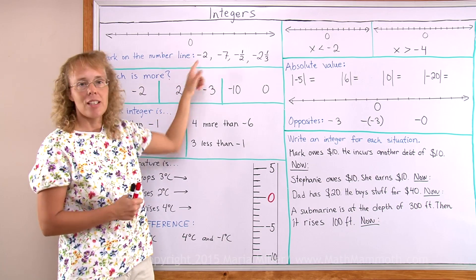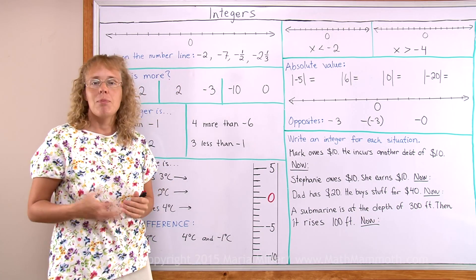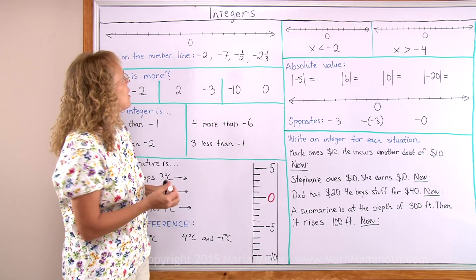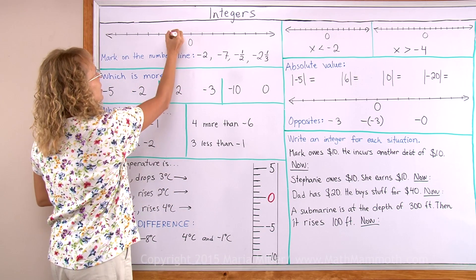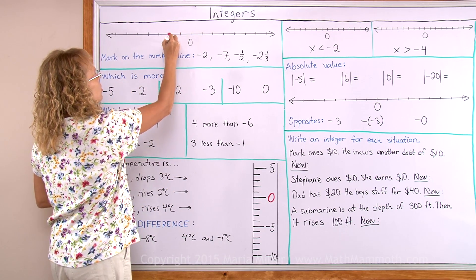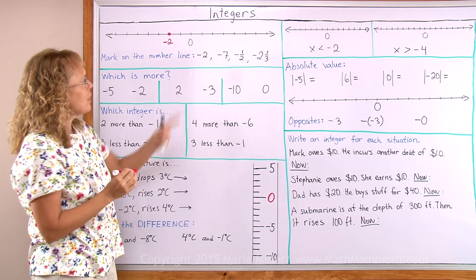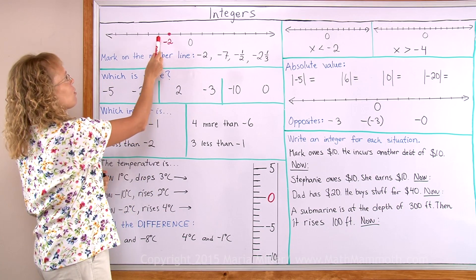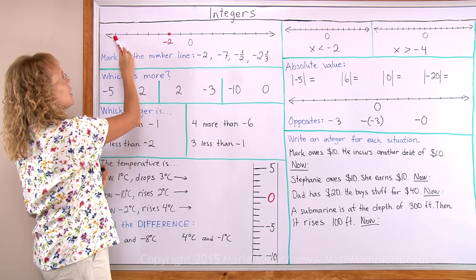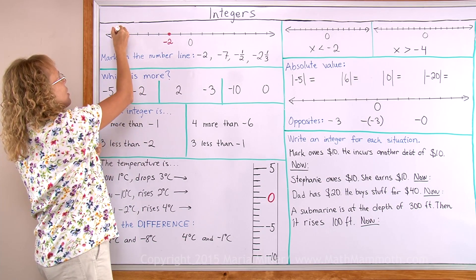Mark on the number line. This number here is negative 2. And some people call it minus 2. So it is right here. Then negative 7. I will continue counting. 3, 4, 5, 6, 7. There is negative 7 over here.